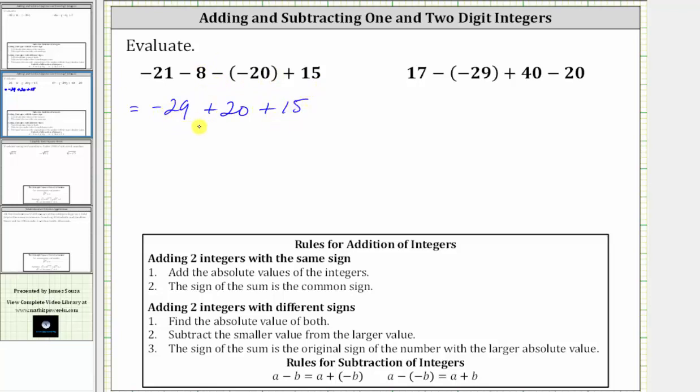The next sum is negative 29 plus 20. We can think of the negative 29 as a loss of $29, and then the plus 20 as a gain of $20. So if we lose $29 and then gain $20,